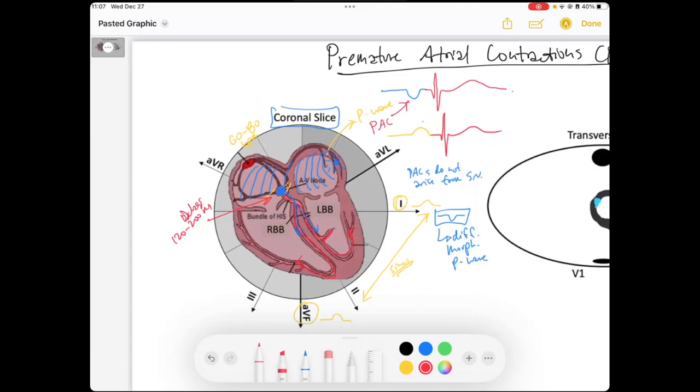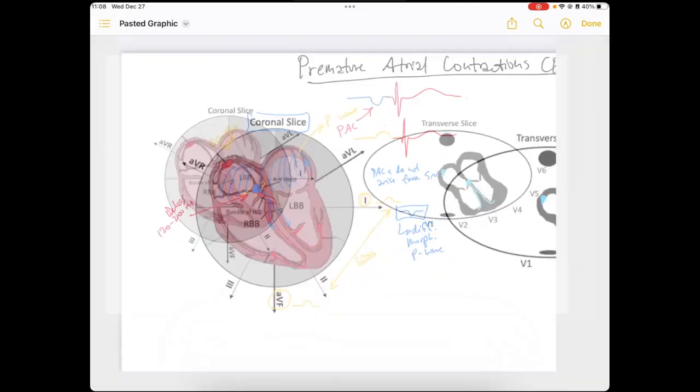And so, PACs, because of that, will classically have QRSs that look the same as the normal QRSs, but they occur early. And when you look at the P wave that drove that QRS, it's going to look a little bit different. So, let's take a look at an EKG with PACs.